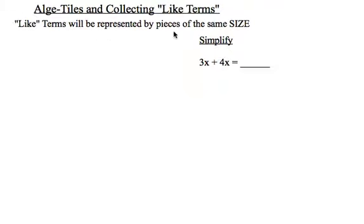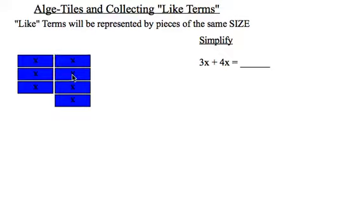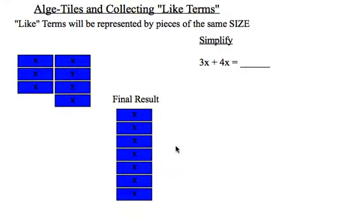So like terms will be represented by pieces of the same size. So if I have this expression 3x plus 4x, this says I have 3 of one object plus 4 of the exact same object. Now you can replace this with 3 apples plus 4 apples, 3 puppies plus 4 puppies. What we're interested in is that they are like or the same. So if I have 3x or 3 blue rectangular algebra tiles, and to that I add another 4 blue rectangular algebra tiles, my final result is that I have 7 blue algebra tiles. Algebraically, it looks like this.